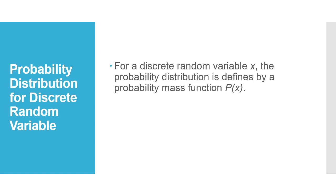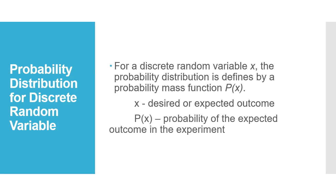For a discrete random variable x, the probability distribution is defined by the probability mass function. The discrete random variable is represented by lowercase x or capital X, and its probability mass function is represented by P(x). Here, x is the desired or expected outcome, and P(x), or the probability of x, is the probability of the expected outcomes in the experiment.